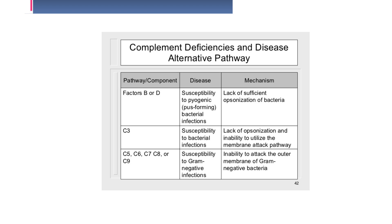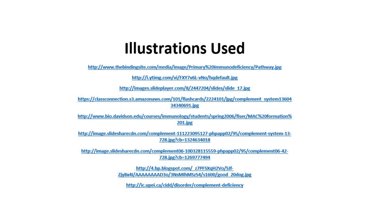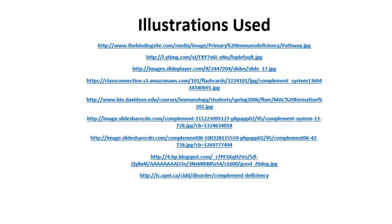The previous visual covered when complement is working but in the autoimmune state, which is not good. And finally, here's a list of those illustrations I used. Thanks a lot.